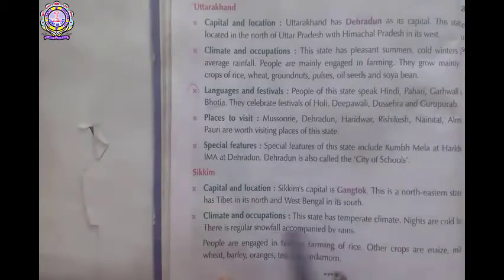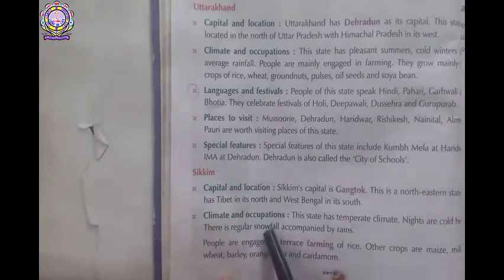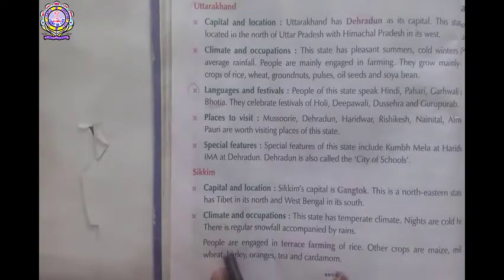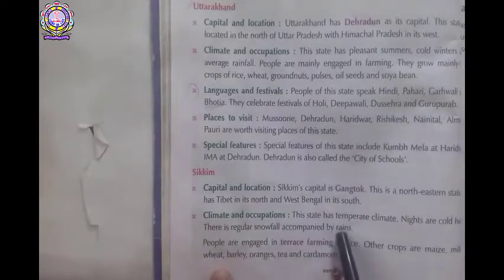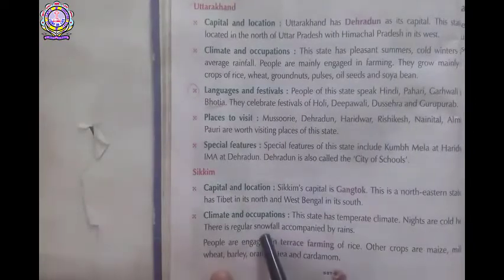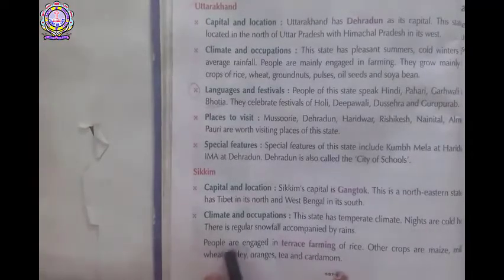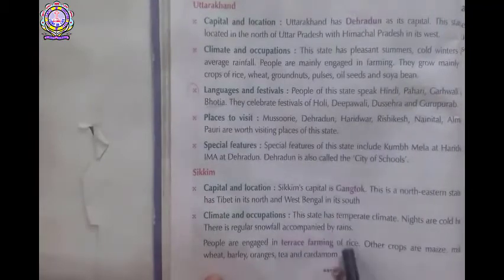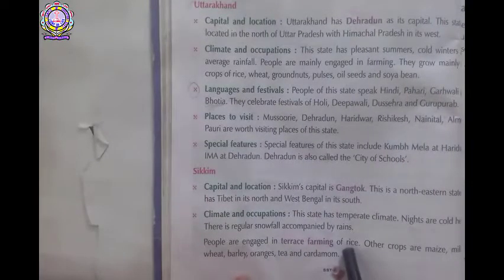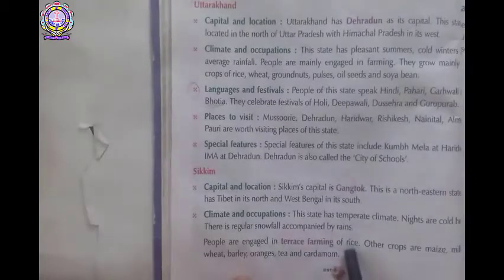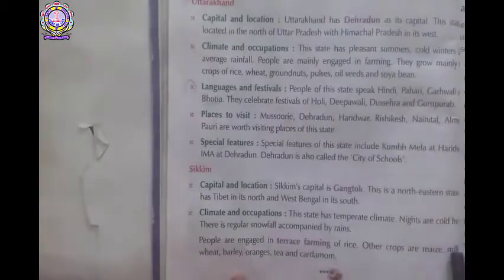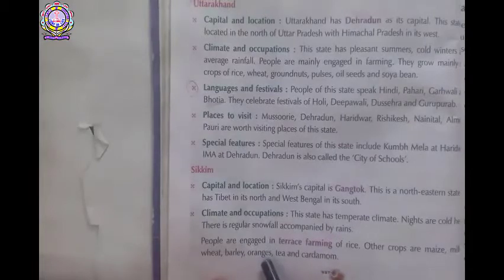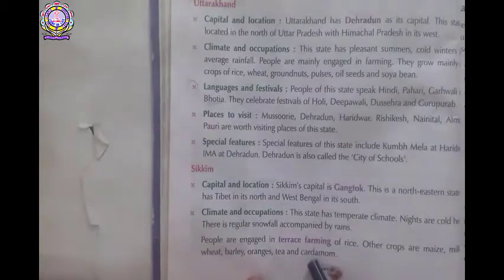With rain, there will be snowfall also. That is the special feature of the climate of Sikkim. People are engaged in terrace farming of rice. Because of the geographical conditions, people of Sikkim practice terrace farming. Other crops are maize, millet, wheat, barley, oranges, tea, and cardamom.